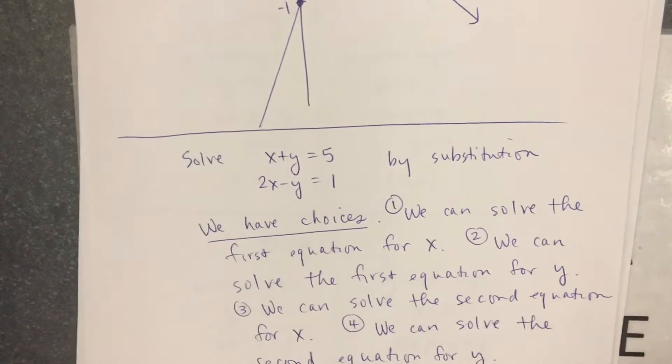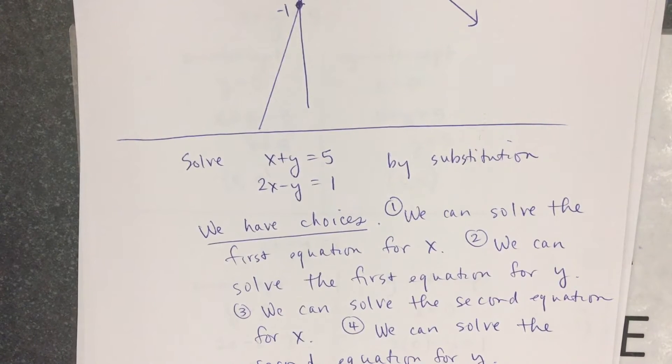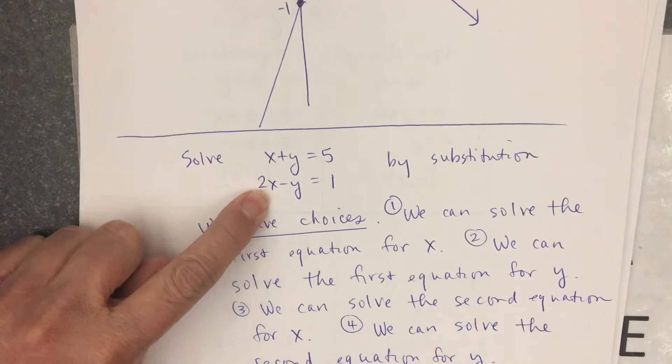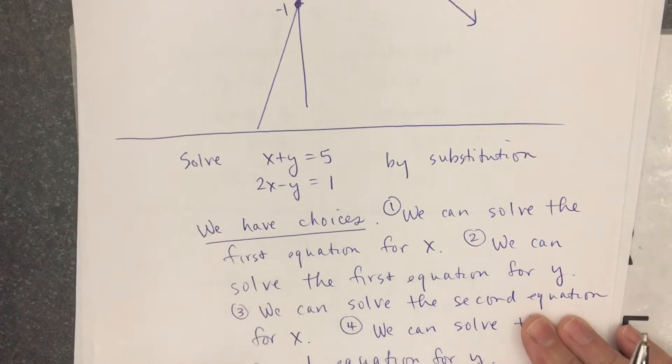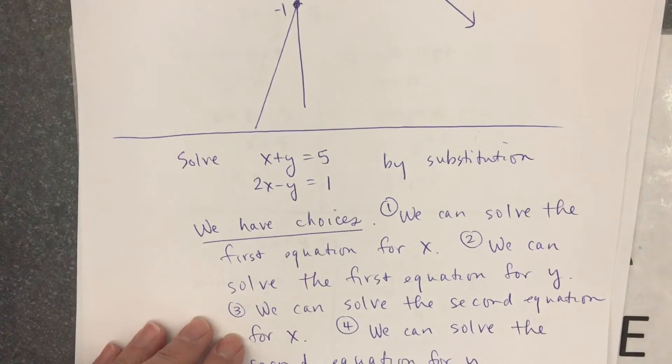You kind of look at the equations and pick one. I do not want to pick my third choice. If I pick my third choice, I'm going to have to divide by 2, and I'm going to end up with some fractions. And we all know if we can avoid fractions, we'd like to do that, correct? Yes. So I don't want the third choice, but it would be an okay choice, but it's not the most efficient choice.